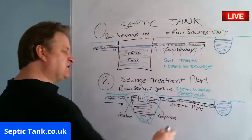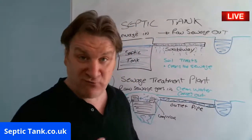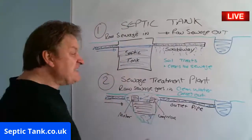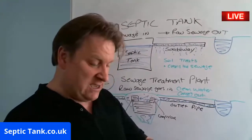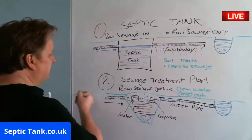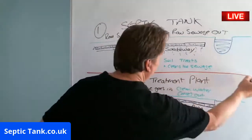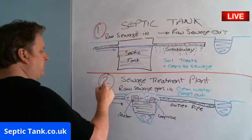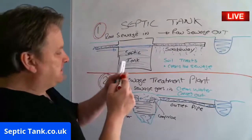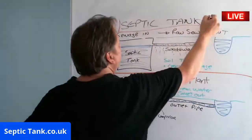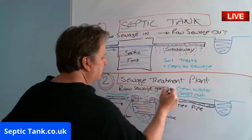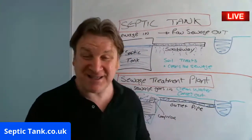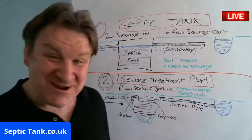The clean water comes out of the outlet pipe and can go into a watercourse like a river, stream, brook, or ditch. Essentially, that's the difference between a septic tank and a sewage treatment plant.